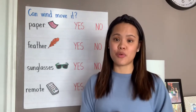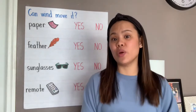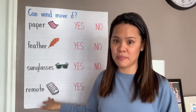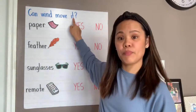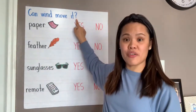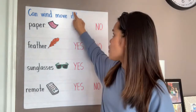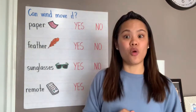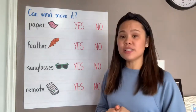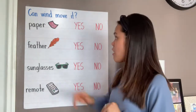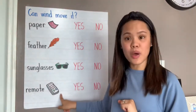Behind me is a chart that I created for this activity. There is one question that we always have to answer whenever we try out a material. That question is: can wind move it? And do you see that there's a question mark right here at the end of that sentence? When you see that question mark, that means there's a question that is being asked. The materials that we need for this activity are paper, feather, sunglasses, and remote.